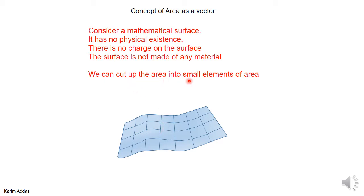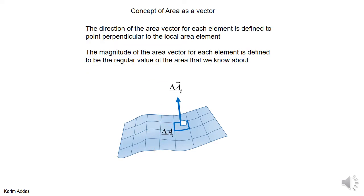Imagine you cut up this area into small elements of area — small squares or whatever elements of area. The area vector for each element is defined such that its direction is perpendicular to the surface at that location. The magnitude of the area vector is just the regular area: this distance times this distance. If this is a small rectangle, you multiply the two side lengths and that gives you the area, which is the magnitude of this vector.